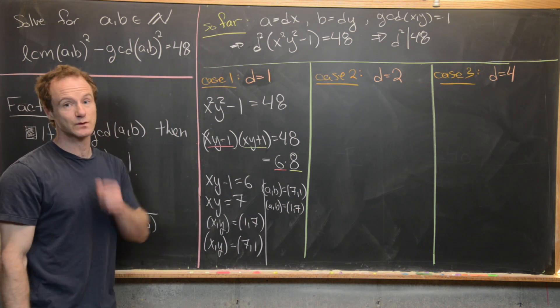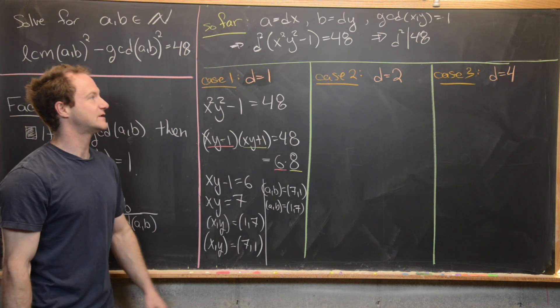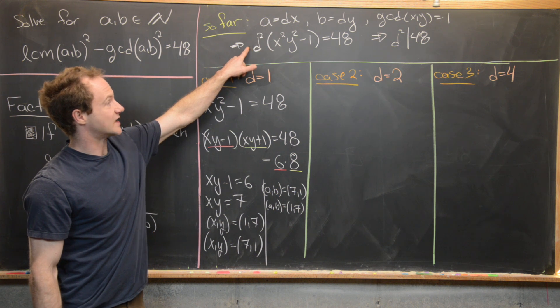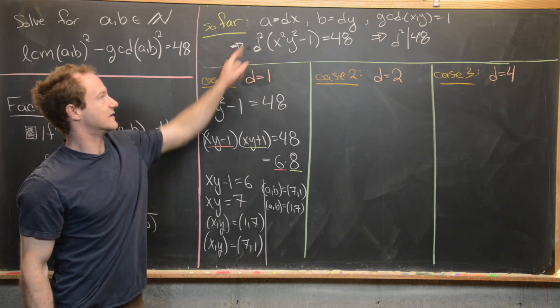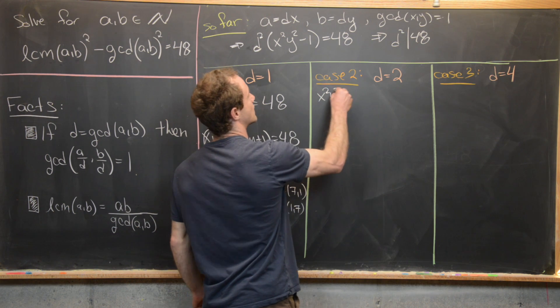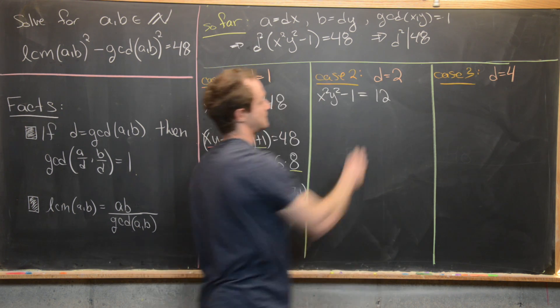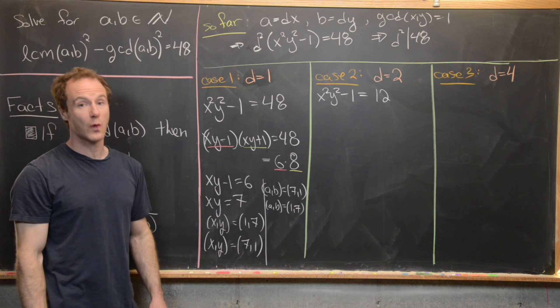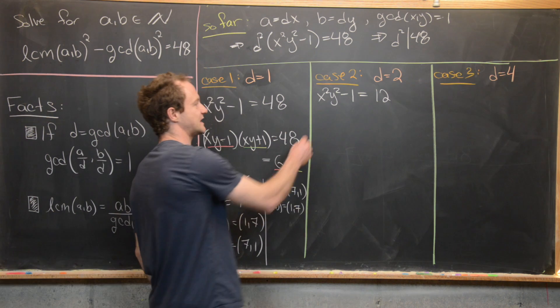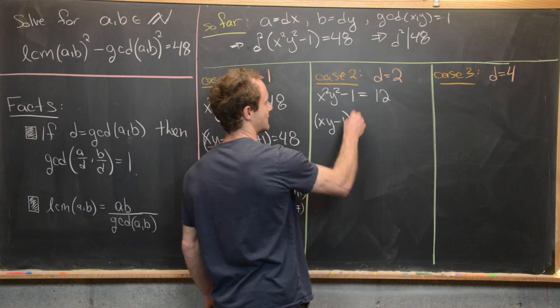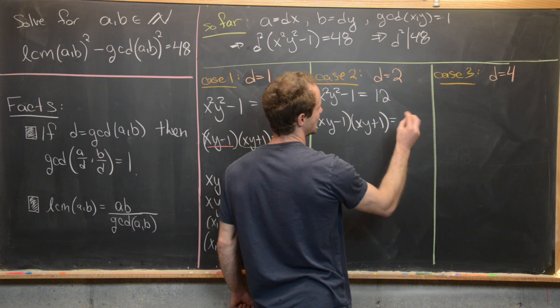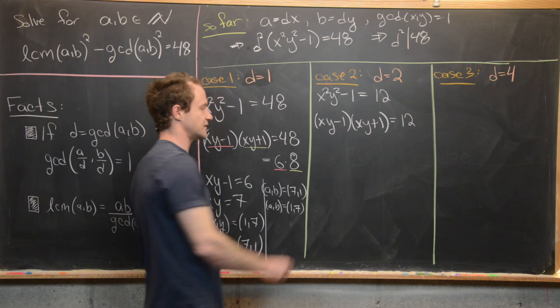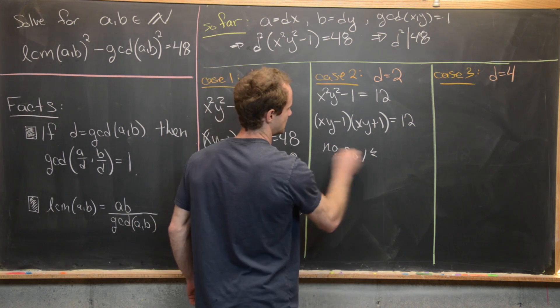So now let's move on to the second case when D equals 2. And let's see what we get in that case. So notice if D equals 2, this is going to change. So we'll have a 4 on this side of the equation. So we'll have X squared, Y squared minus 1 equals 12. Here I just divided the 4 over. And now we want to see can we factor 12 into two numbers that differ by 2? Because notice we have the same thing going on here. We have X, Y minus 1, X, Y plus 1 equals 12. But there's no way to factor 12 into numbers that differ by 2. So there's no solution down this path.